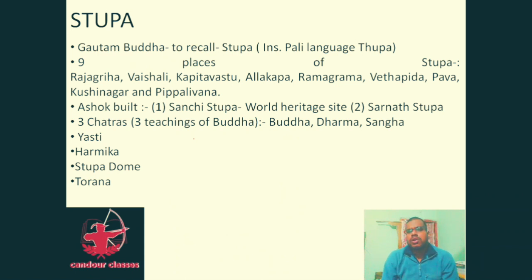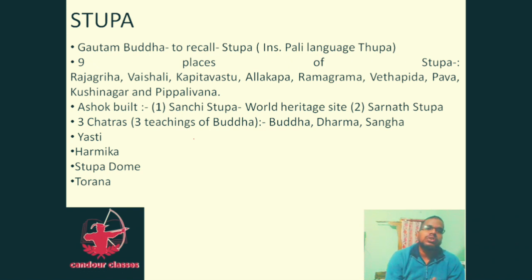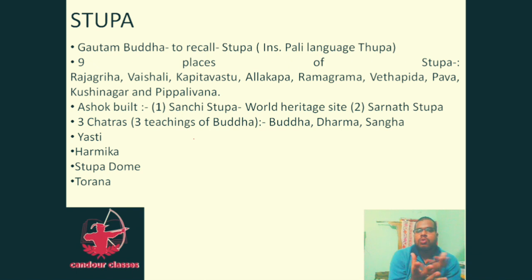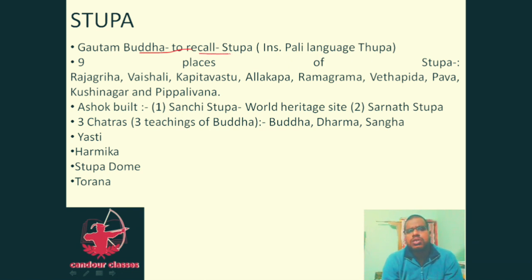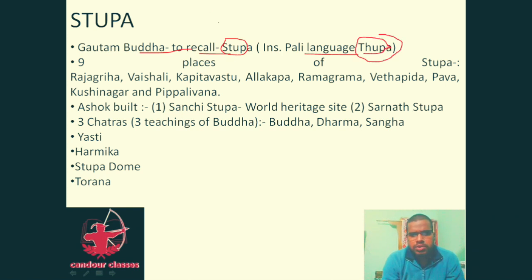A stupa is a monument built following Gautam Buddha's instruction that after his death, his body should be covered with a round-shaped mound and people should circumambulate it to remember him. The word 'stupa' is derived from the Pali word 'thupa.'